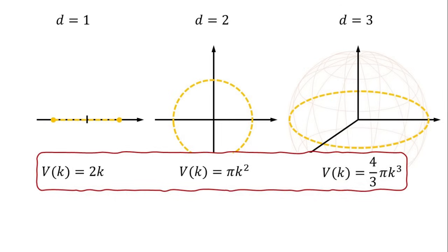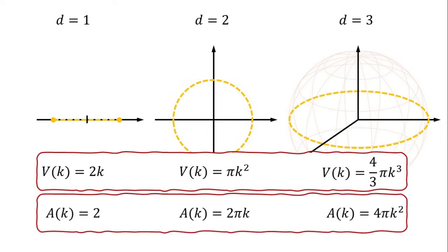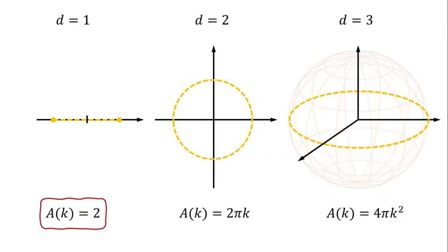Just as the term volume is used in a generalized sense to describe the d-dimensional space, we can similarly derive the surface area that encloses all wave vectors up to k by differentiating the volume with respect to k. Here, the surface refers to the boundary of the d-dimensional region in k-space. For d equals to 1, the surface area is 2, referring to two boundary points. For d equals to 2, the surface area is the circumference of the circle with radius k. For d equals to 3, the surface area is the actual area of the sphere with radius k.